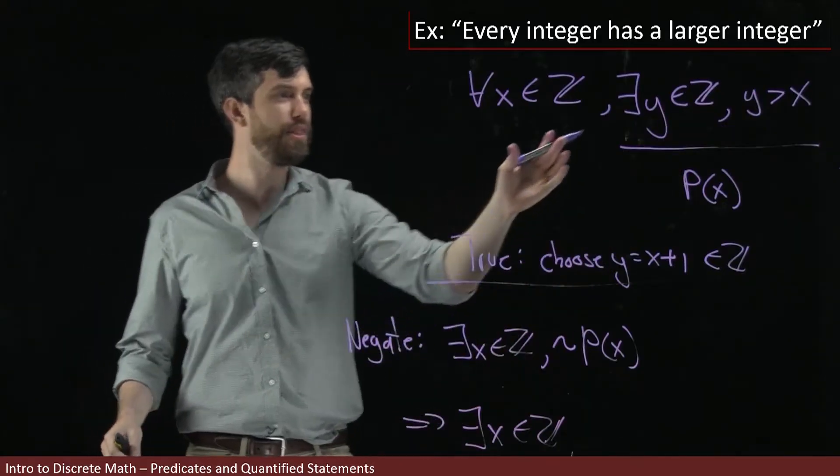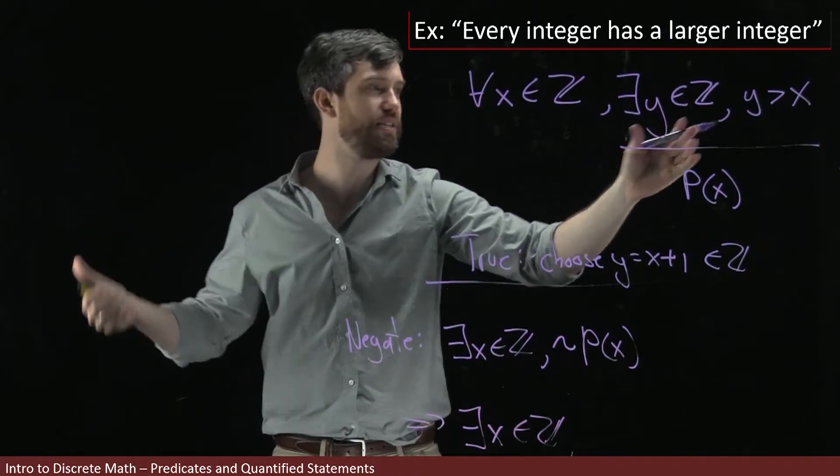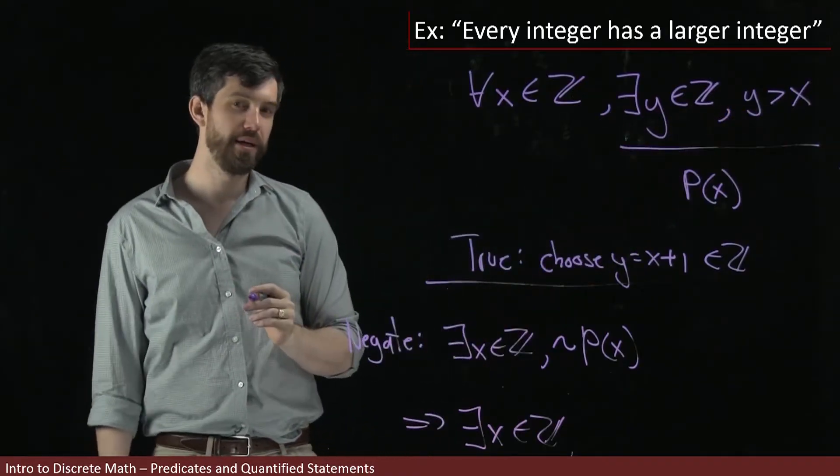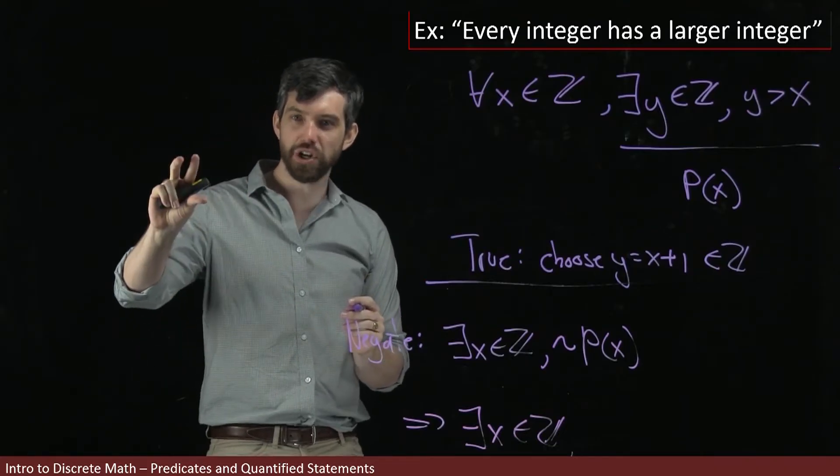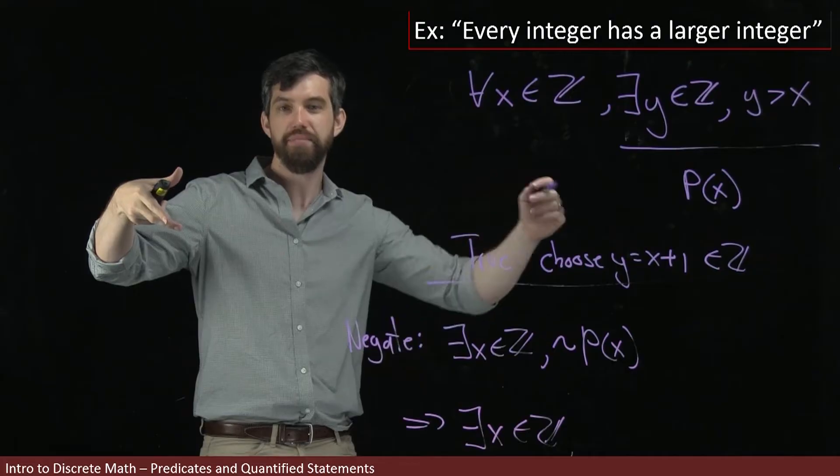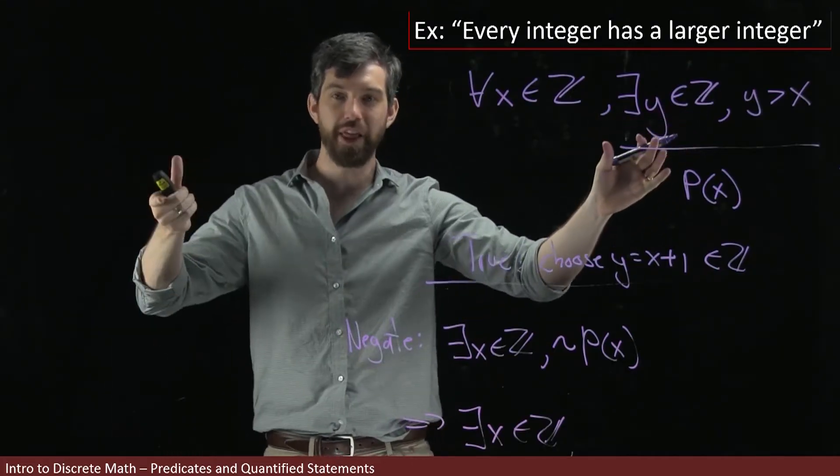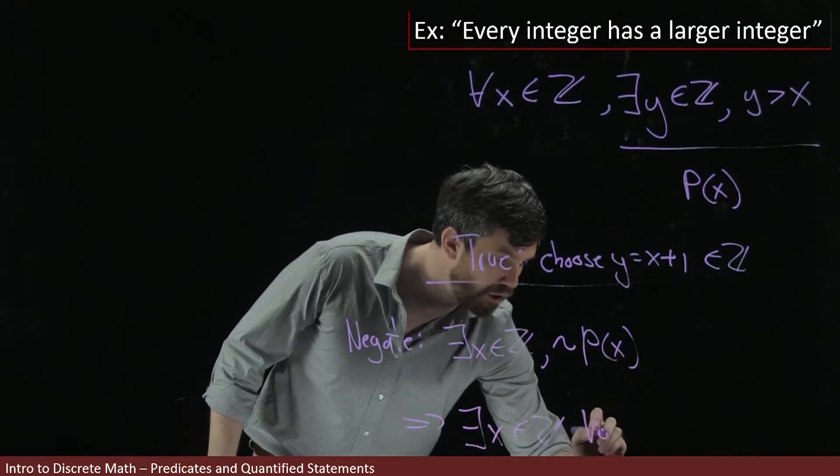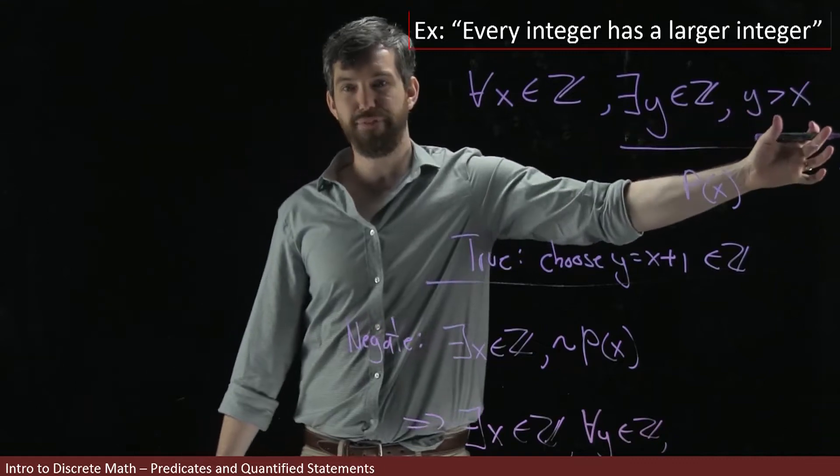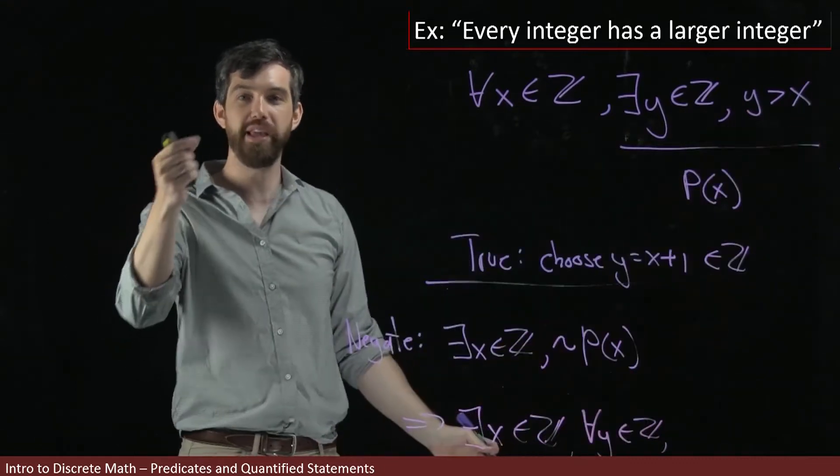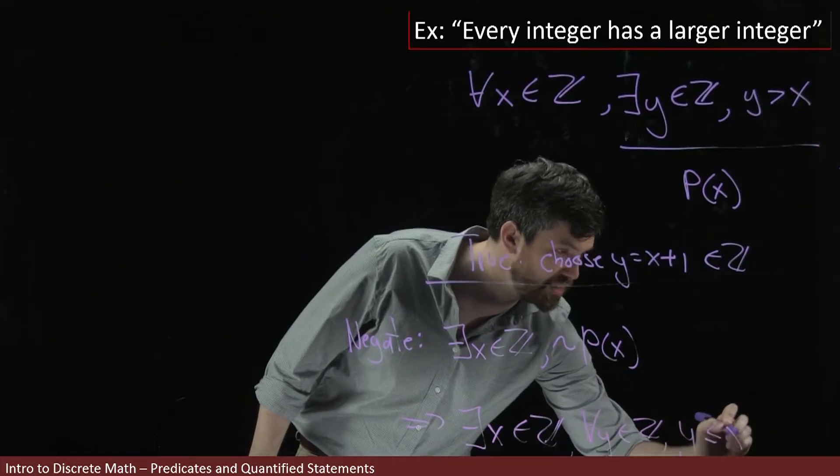Well, this predicate starts off with there exists a y such that some property. However, we know that when I negate an existential, it flips to a universal and negates the property. So instead of having there exists a y, it flips and becomes for all y in the integers. And finally, it negates this final property, y being greater than x becomes y is less than or equal to x.